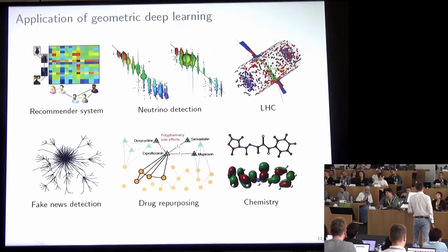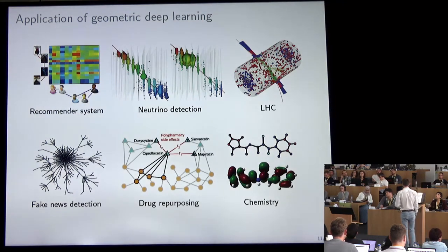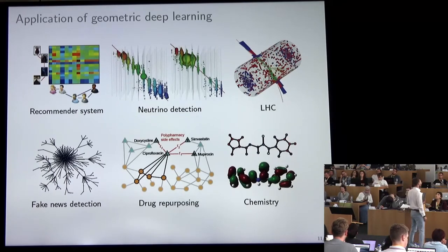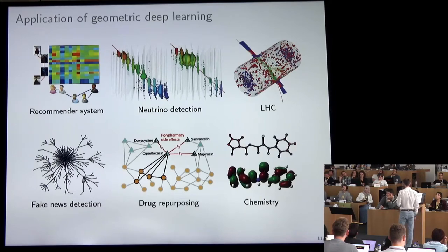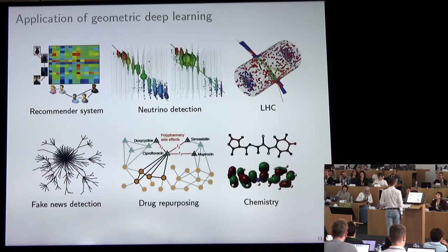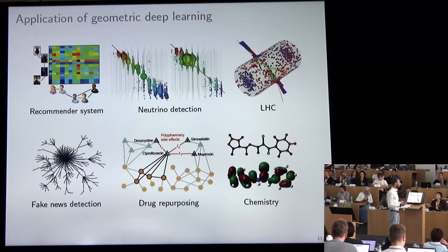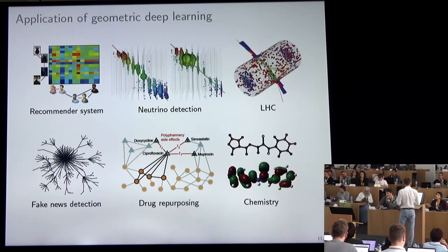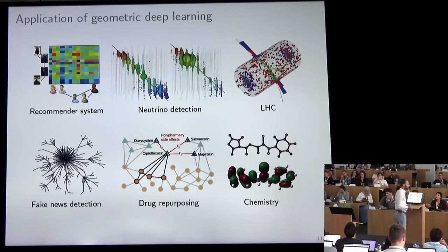We can see some success stories — these methods are not completely exotic. Graphs are essentially ubiquitous; you can model practically any system of relations or interactions between things as a graph. You can apply deep learning on graphs to recommended systems, high-energy physics modeling interactions between particles, social media — such as detecting fake news — and applications in chemistry, drug repositioning, and drug design.